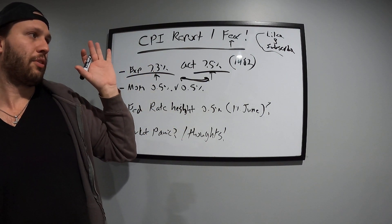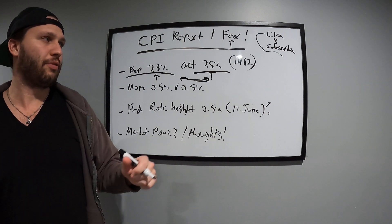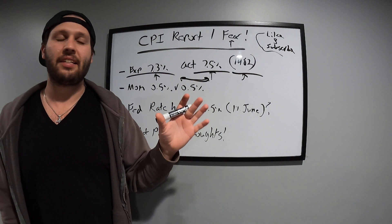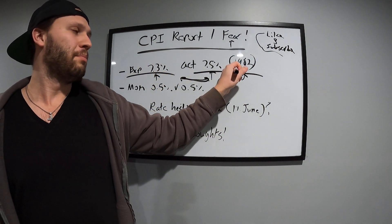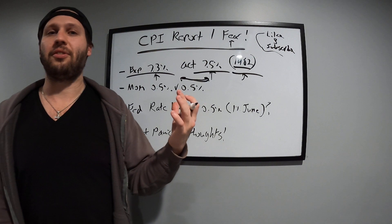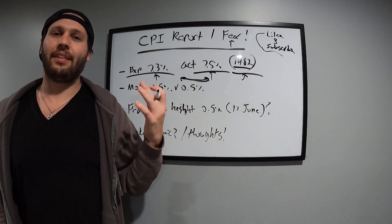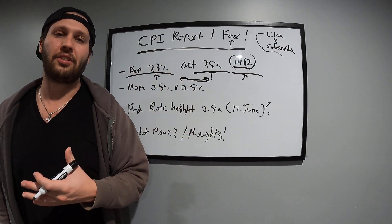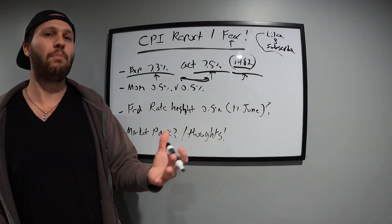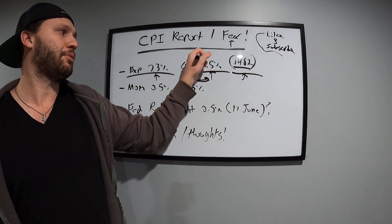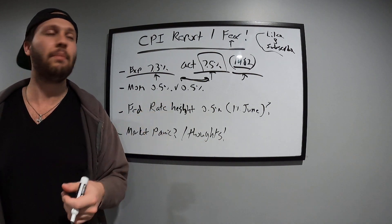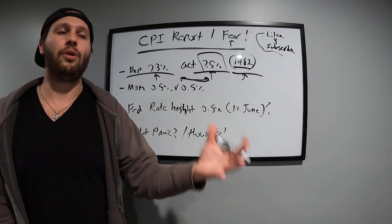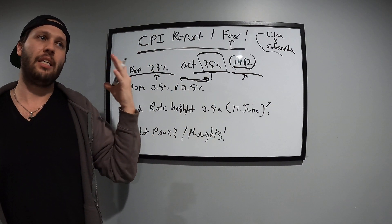Expectation 7.3, actual 7.5. Every headline that you see if you go on Google or you search CPI data today says most inflation since 1982. Now, it's expected, right? The market has this all priced in. We know it's going to be high. We know at some point, this, in my opinion, is probably the peak inflation.